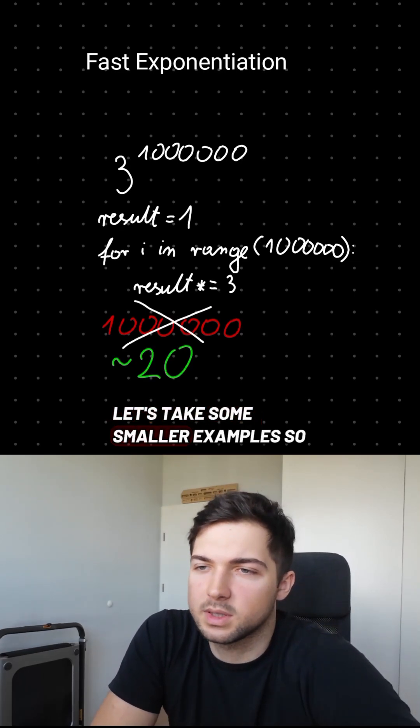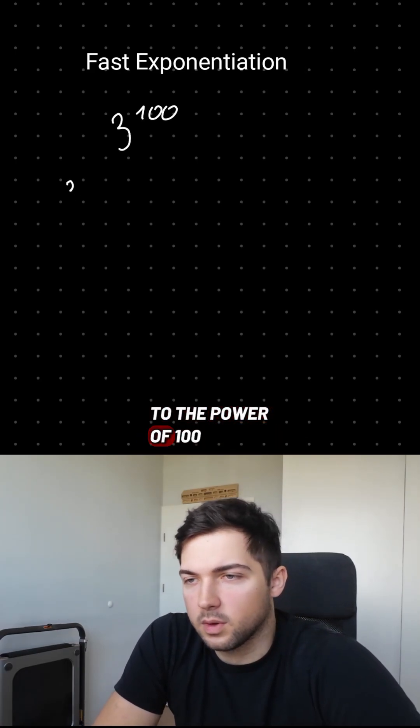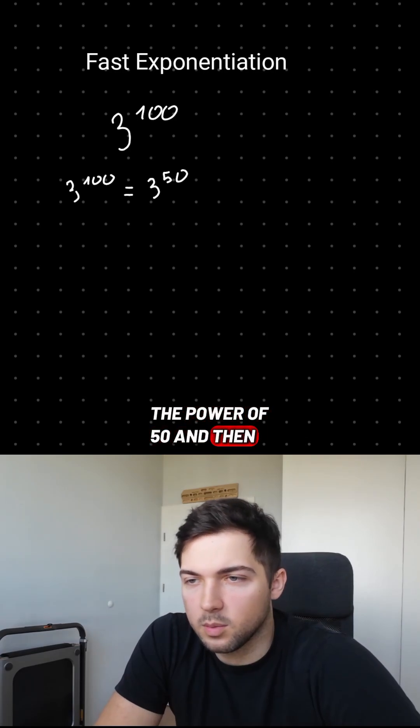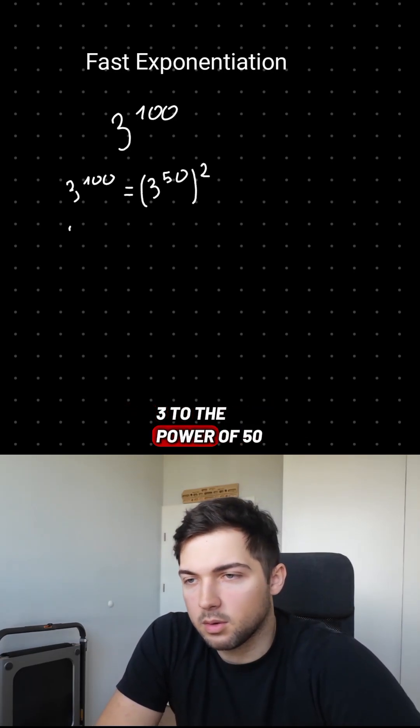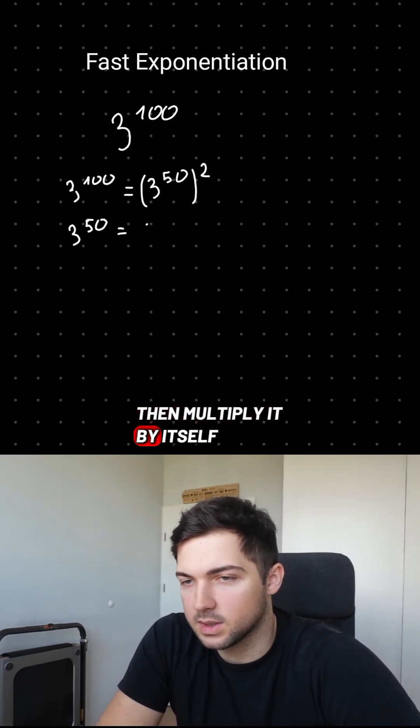Let's take some smaller examples so my hand doesn't fall off. If we want to calculate 3 to the power of 100, we can just calculate 3 to the power of 50 and then multiply that by itself. So now we need to calculate 3 to the power of 50, then we calculate 3 to the 25th, then multiply it by itself.